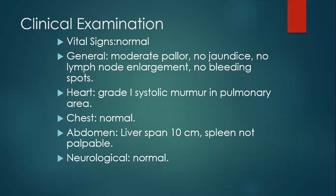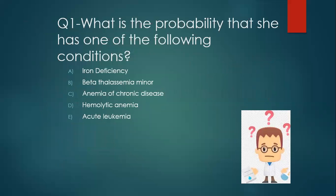As you can see, the physical exam findings were also few. Now we want to discuss the probability of some of the causes of anemia in this young lady. As you know, the differential diagnosis can include a very long list, but our brain picks the important or common causes, and we need to verify whether the probabilities of these differential diagnoses are present.